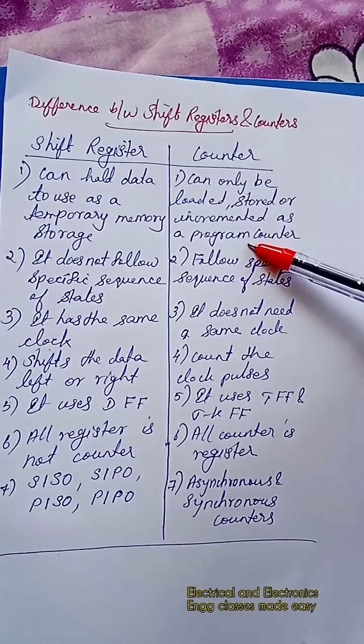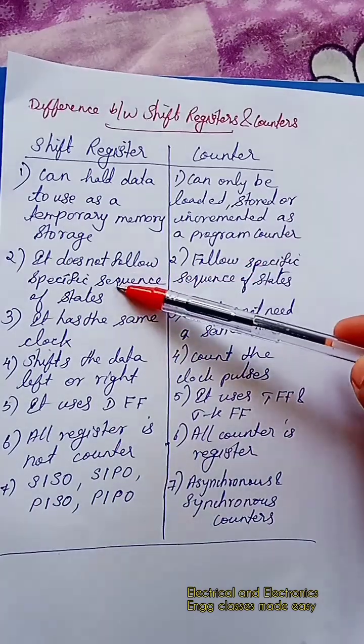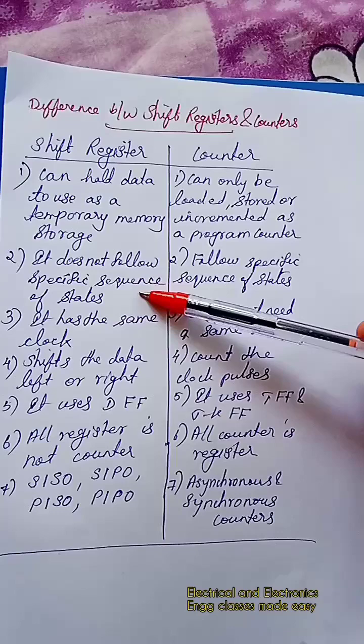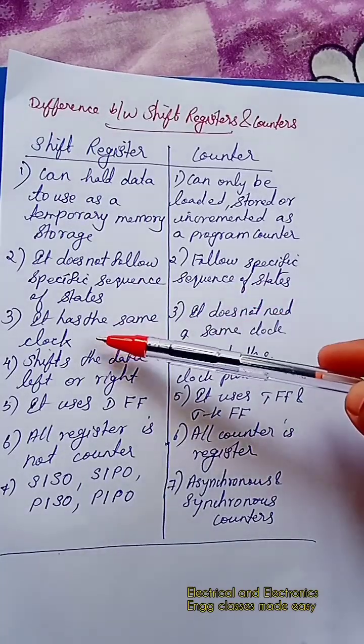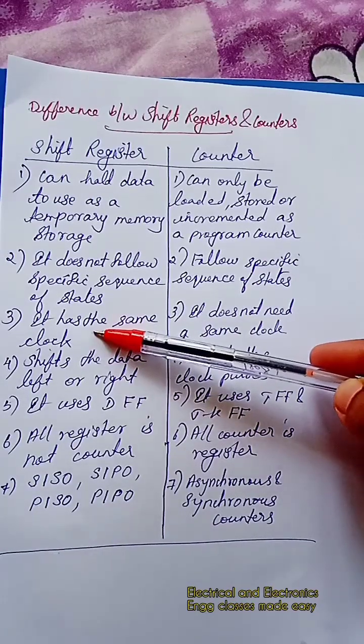A shift register does not follow a specific sequence of states. Counter follows a specific sequence of states. Shift register has the same clock.